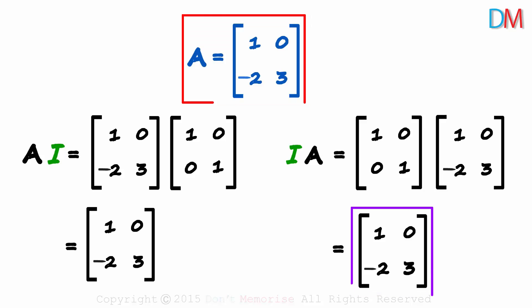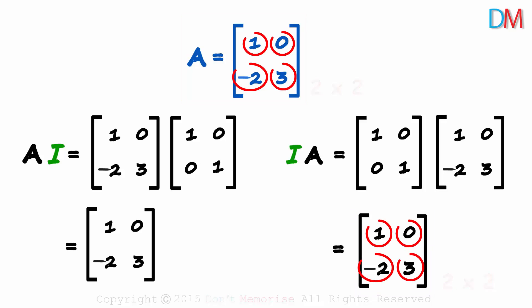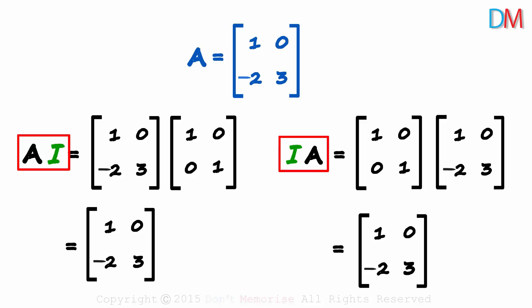The orders of both matrices are the same and the corresponding elements are also equal. If I is the identity matrix, then both A times I and I times A will give us matrix A.